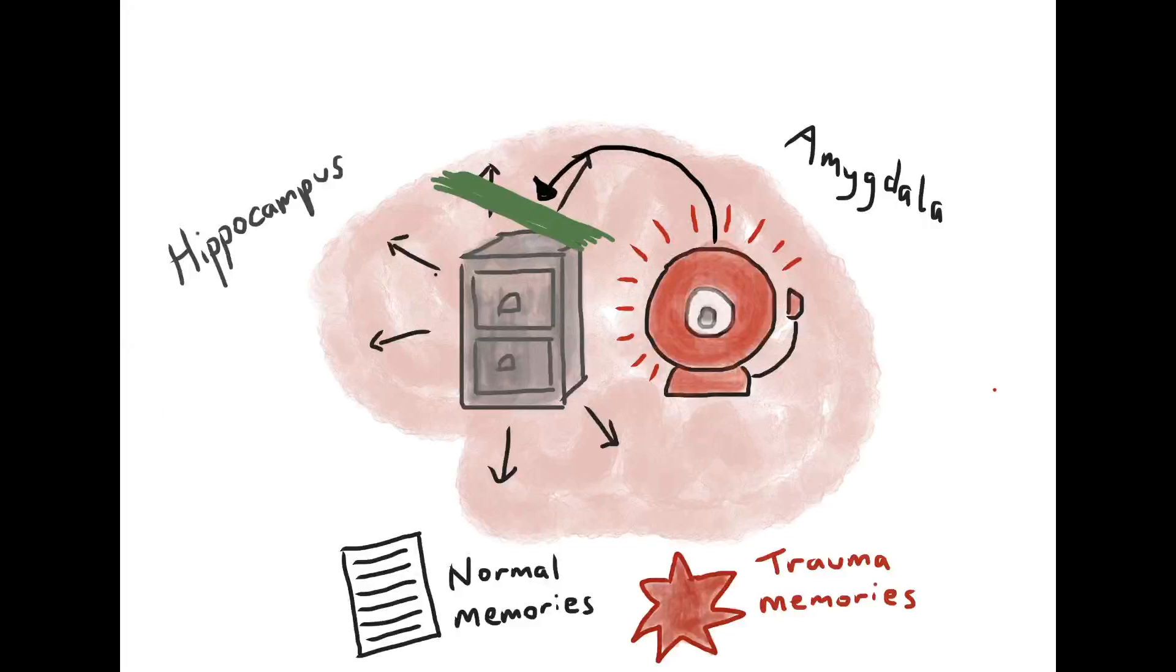In some cases, because these memories are so intrusive, overwhelming and distressing, people do whatever they can to stop them from coming back. They avoid anything and anyone that might trigger the memories. They try to develop strategies to block and suppress the memories, whether it's through drugs and alcohol, distraction, or leaving no space to think and feel.